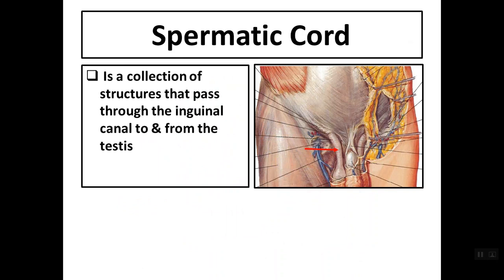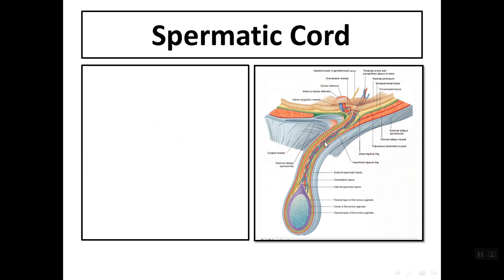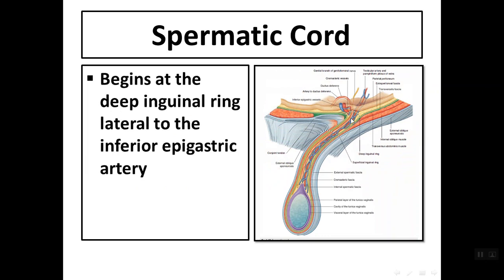The inguinal canal facilitates the passage of the spermatic cord in males. The spermatic cord passes through the inguinal canal — it is a collection of structures that pass through the inguinal canal to and from the testis. It begins at the deep inguinal ring, lateral to the inferior epigastric vessels, and ends at the testis.